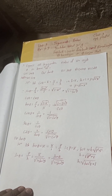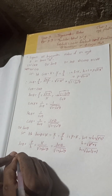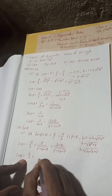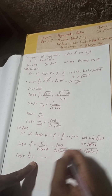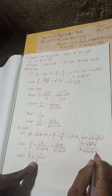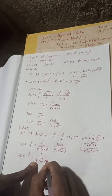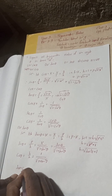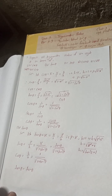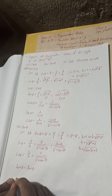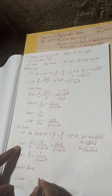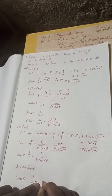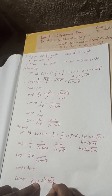Cos theta = b/h = 1 / √(1 + tan²theta). Tan theta in terms of tan theta is simply tan theta. Cosec theta = 1/sin theta, which is the reciprocal of sin theta, so cosec theta = √(1 + tan²theta) / tan theta.